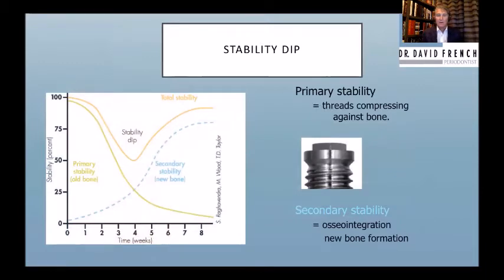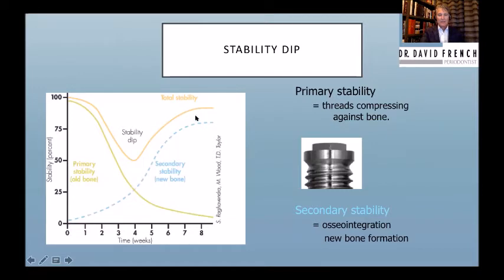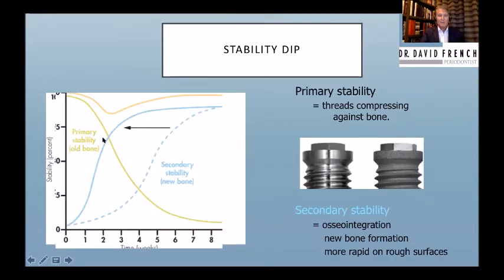If we have a machined implant, we put it in and the threads hold it stable. Over the first couple of weeks, the bone will die back from the trauma of thread compression and drilling, and we get a stability drop. The bone doesn't really reform until about two months later, so old implants needed three to four months of healing before loading. If we roughen the surface, bone growth to the implant is quicker and we get more bone-to-implant contact, so we can load as early as two to three weeks and certainly by four to six weeks.